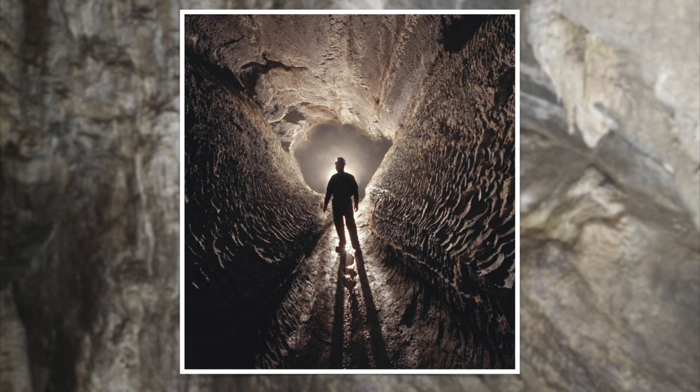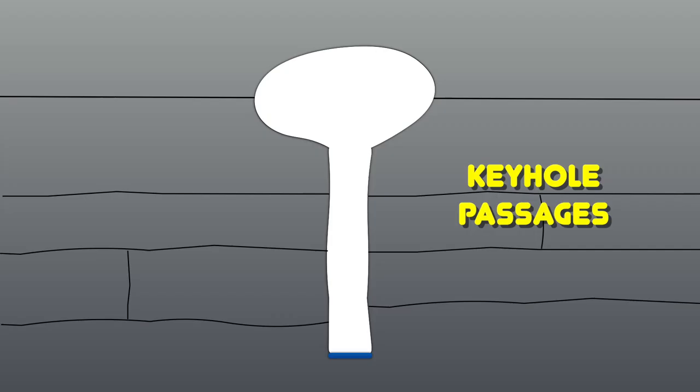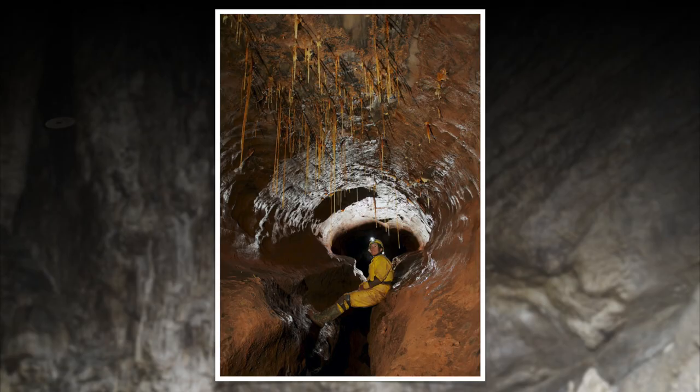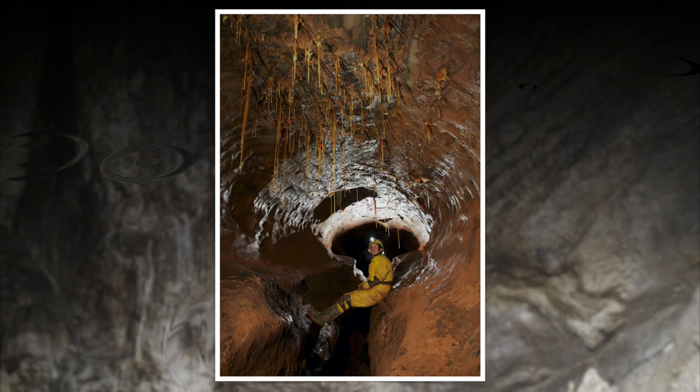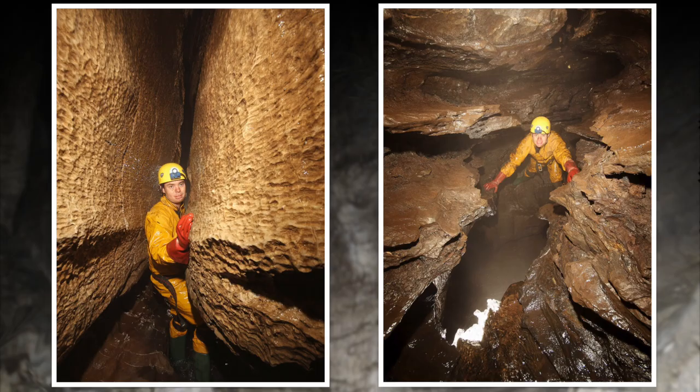As the vadose trough gets cut deeper and deeper, a keyhole-shaped passage is formed, with a stream flowing at the bottom of a deep rift. Here is an example of a keyhole passage. Jessie's head and torso are clearly in the original phreatic tube, and her legs are in the vadose trench. These photographs were taken in Ogof Yr Esgyrn. In the left-hand photo, Chris is walking in the stream at the bottom of a narrow keyhole passage.